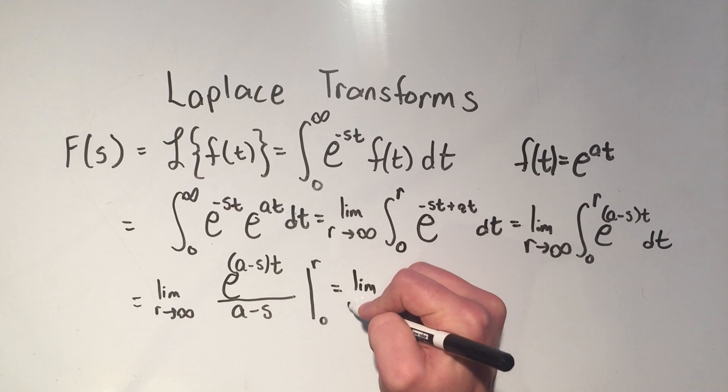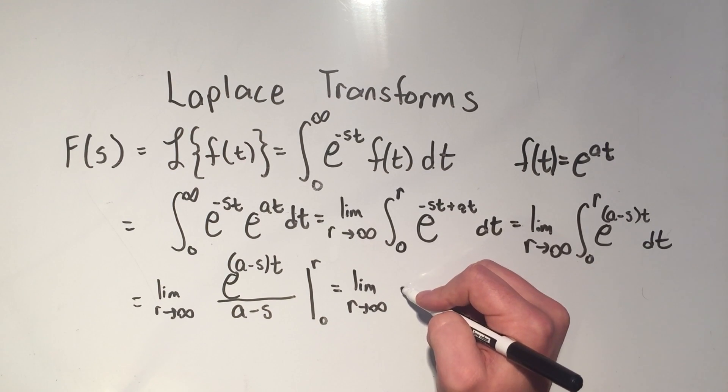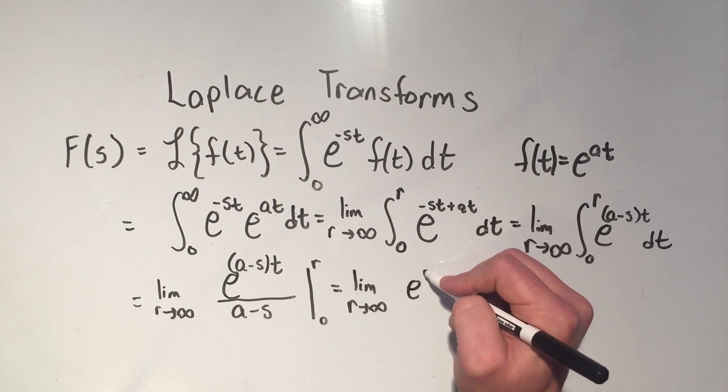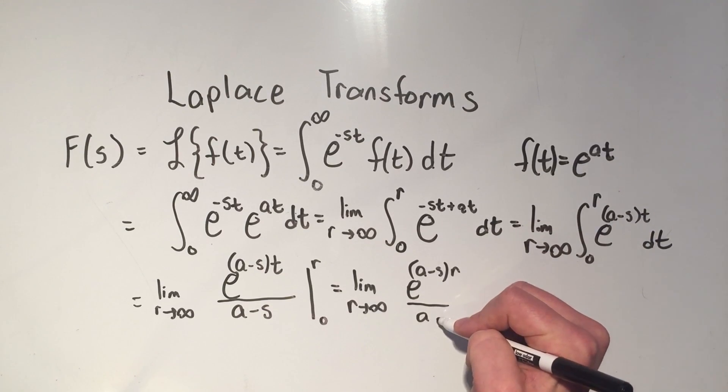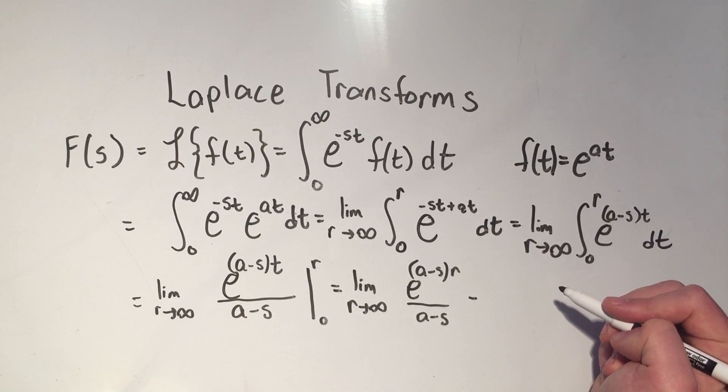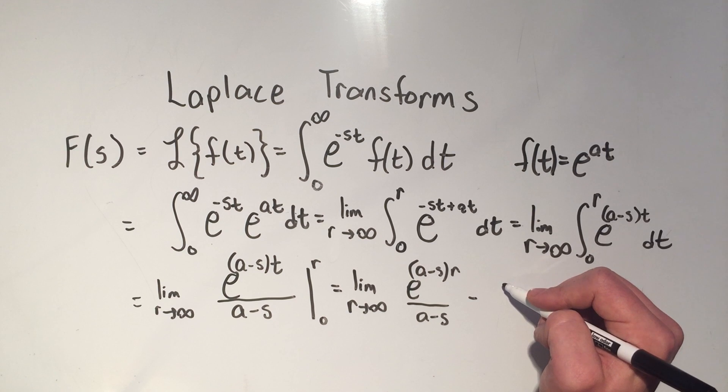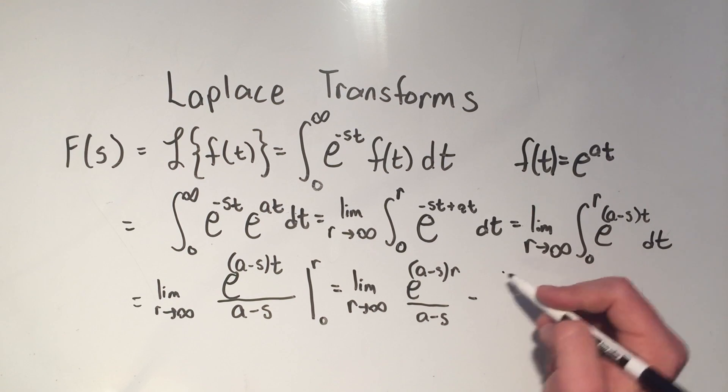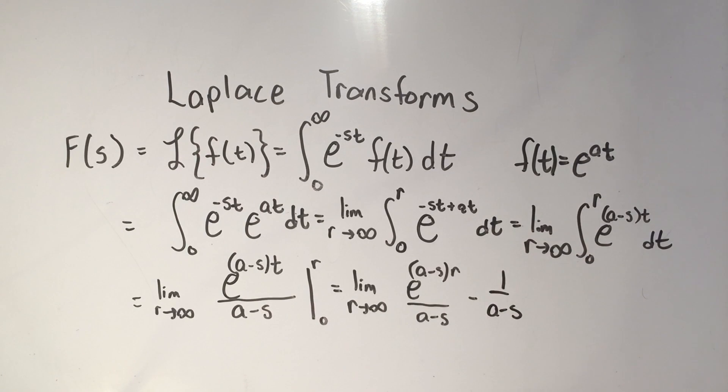So that's the limit as r goes to infinity. If I plug in r, that's e to the a minus s times r over a minus s minus, if I plug in 0, that's e to the 0 is 1 over a minus s.